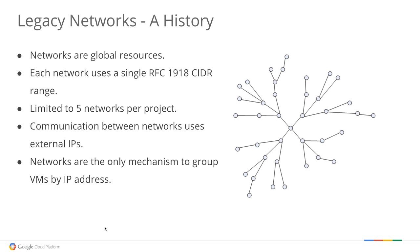Going into a Google Cloud project, this is sometimes referred to as a legacy network or a default network. Within a Google Cloud project, you can create up to five of these legacy networks, and each network can use a single RFC 1918 CIDR range. If you wanted to create multiple projects or multiple networks inside a project and communicate between them, because each one has its own CIDR range and its own private network, the only way to communicate with them is through an external IP. In the old world, networks were the only mechanism to group VMs by IP addresses — this is considered the legacy network. Today, we have something called subnetworks, which we see much more traction with our customer base.